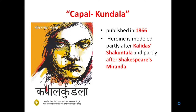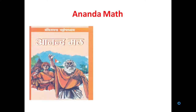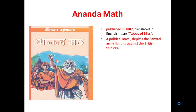Finally we move on to the last work, Anand Mat. Even if you don't know about Bankim Chandra Chatterjee, you must have heard of this work. Anand Mat was published in 1882 and when translated into English means Abbey of Bliss. It is a political novel which depicts the Sanyasi army fighting against the British soldiers, and you can see the rise of Indian nationalism in this work.